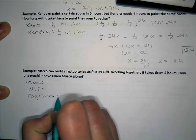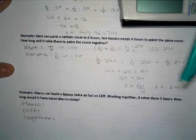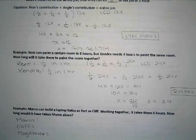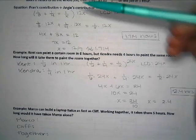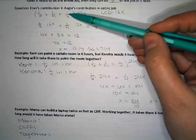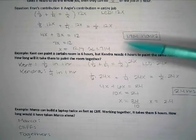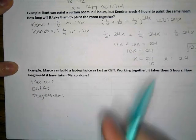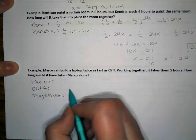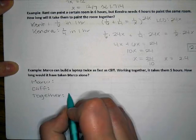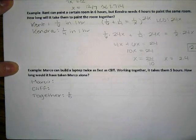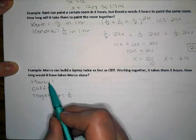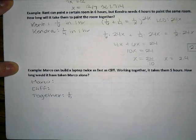Working together it takes them five hours. How long would it have taken Marco alone? So this is different than the two situations that we went over in the video because in the video, together was what we were always solving for. Here together we know it's five hours. So we know that they're going to be able to do one fifth of the job in one hour working together.